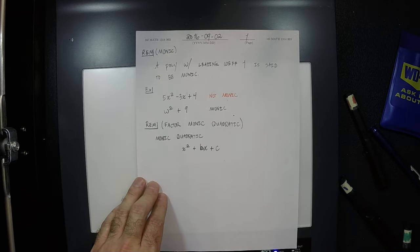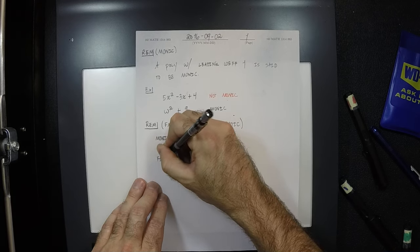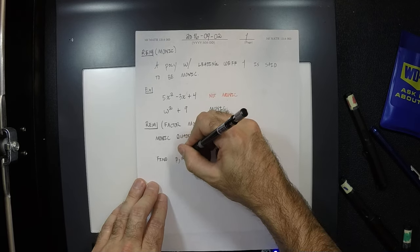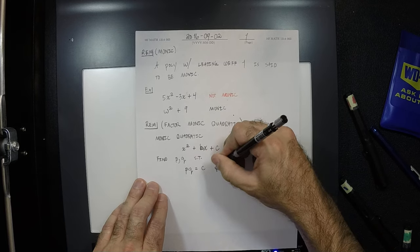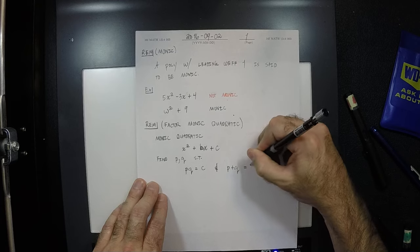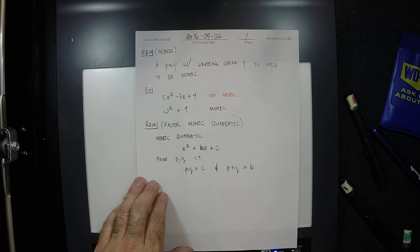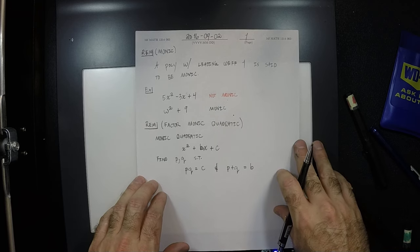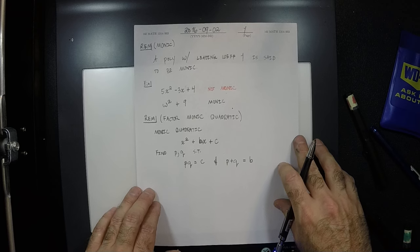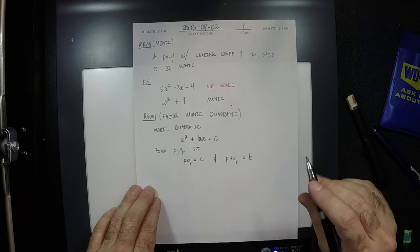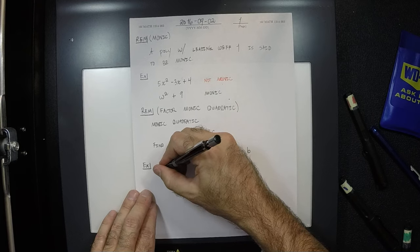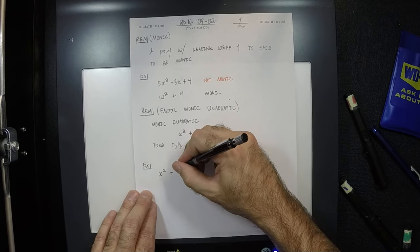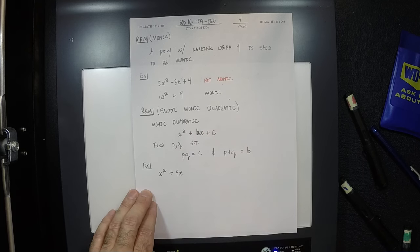To factor a monic quadratic, you find numbers p and q such that the product pq is c, and the sum p plus q is b. Most of you, if you've had any algebra class before, already know this. So let's do an example. How about x squared plus 9x plus 20? I need someone to give me two numbers that add to 9. 4 and 5.